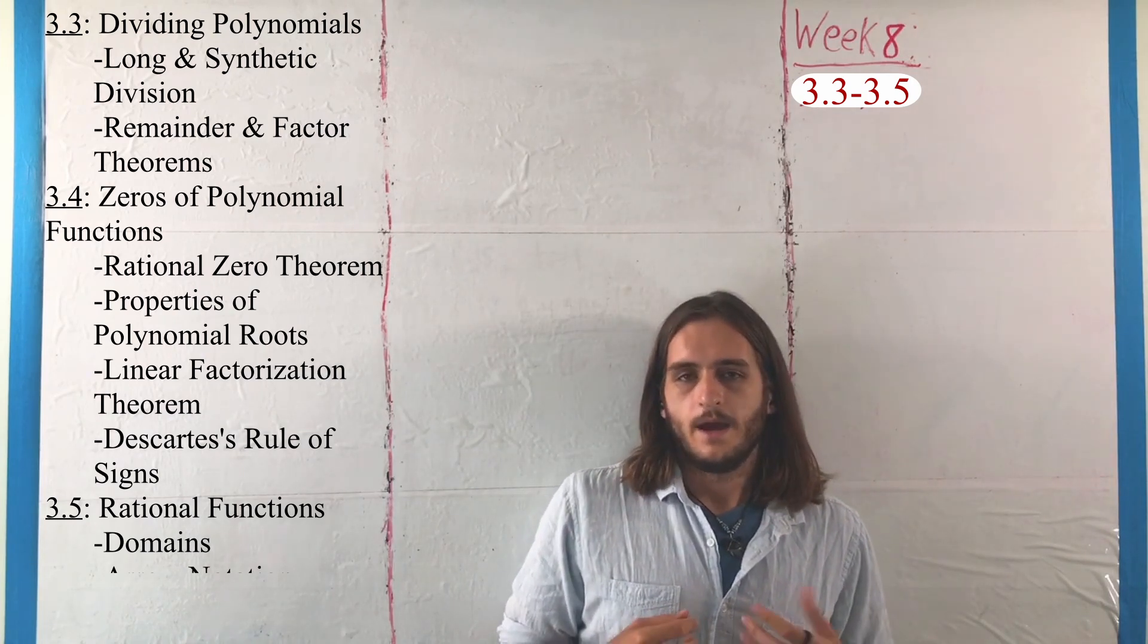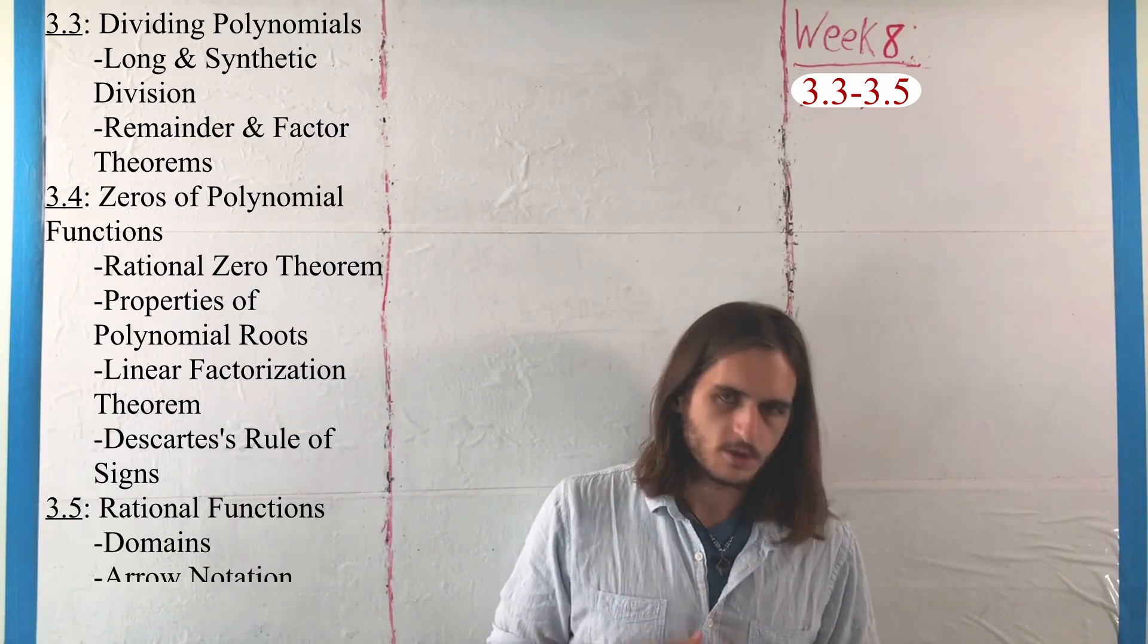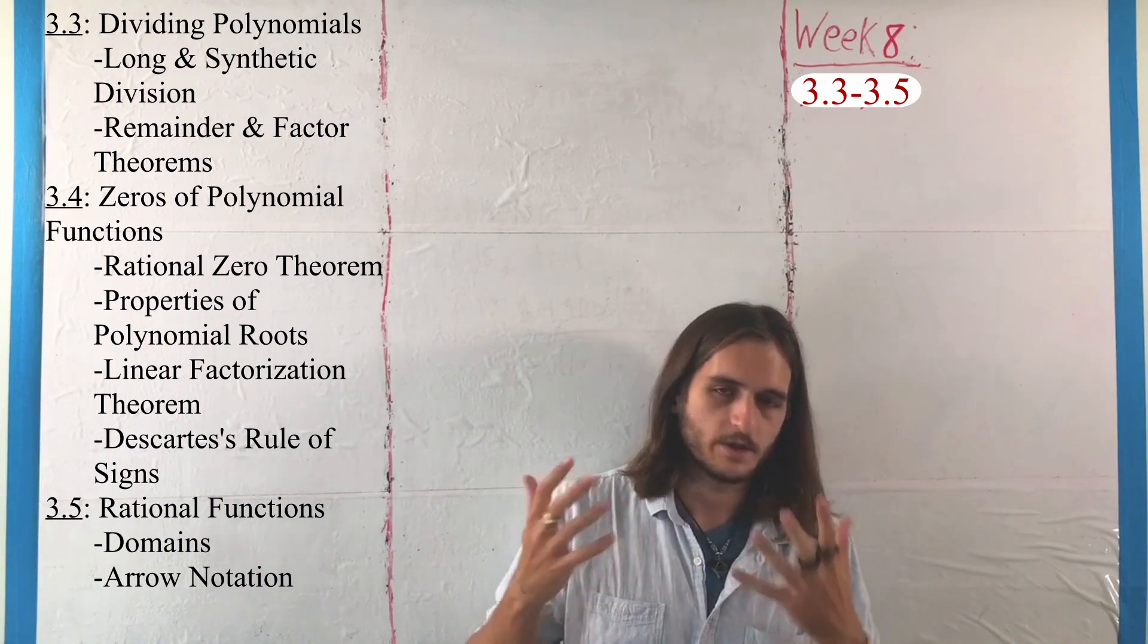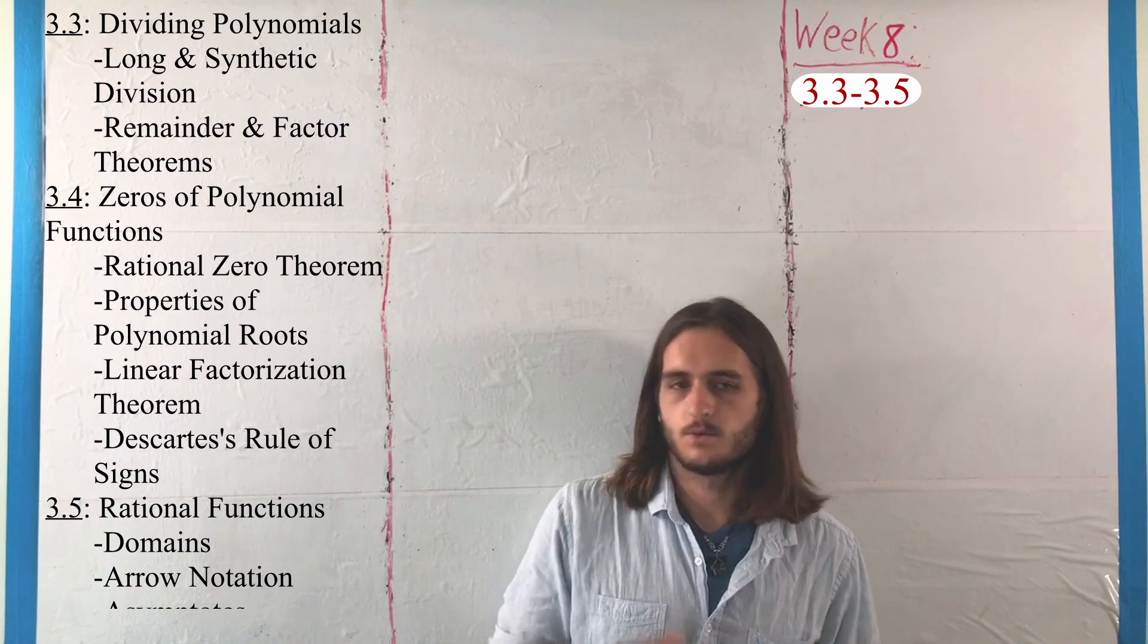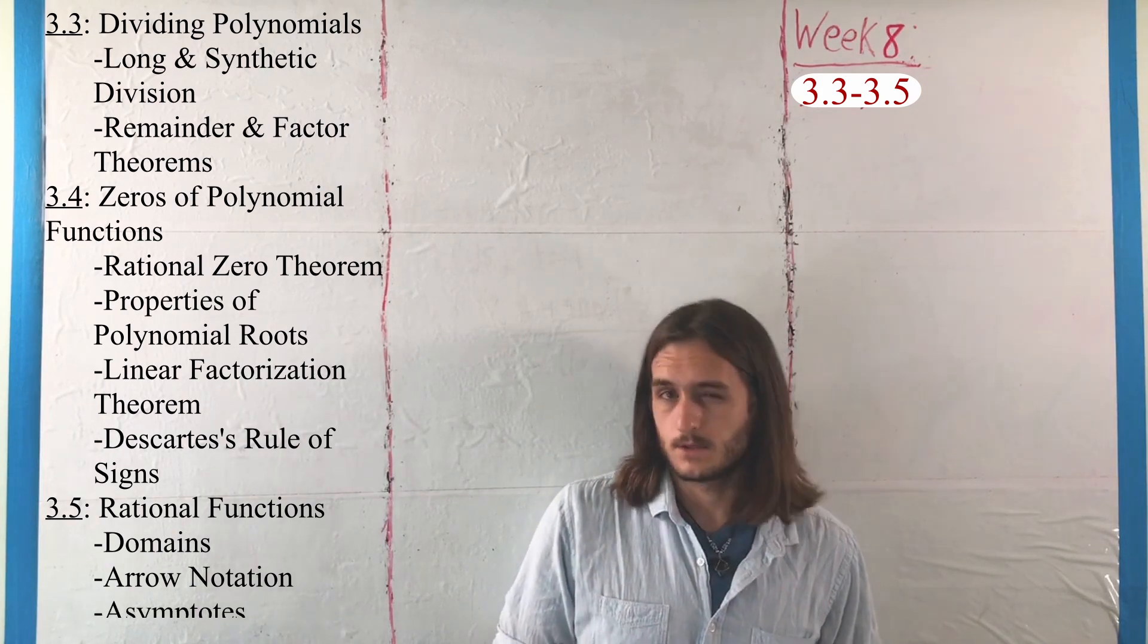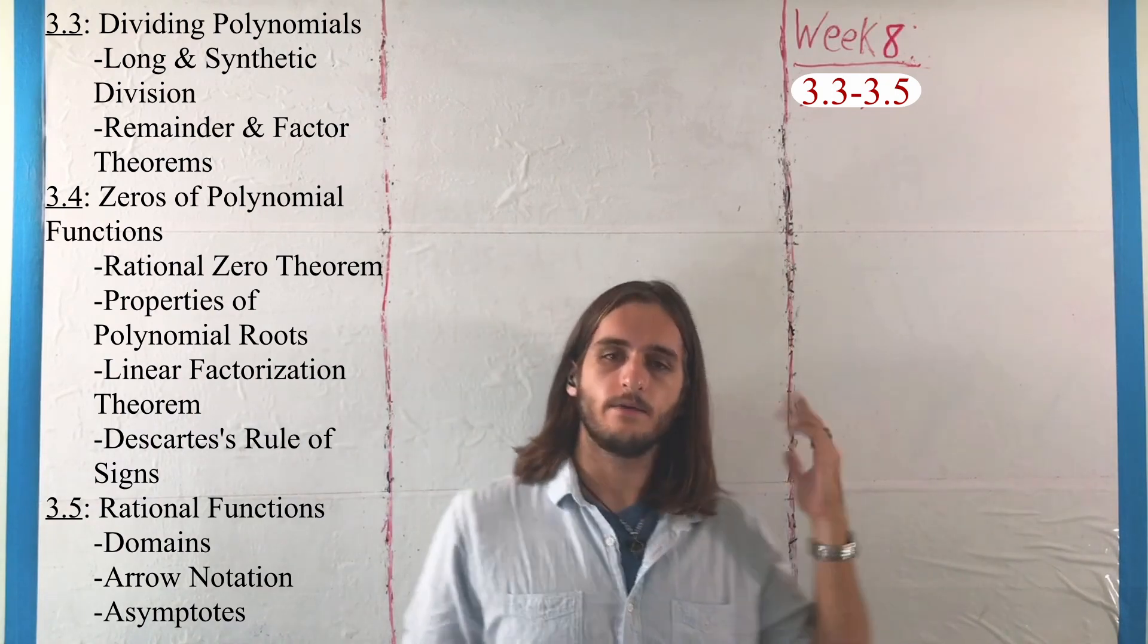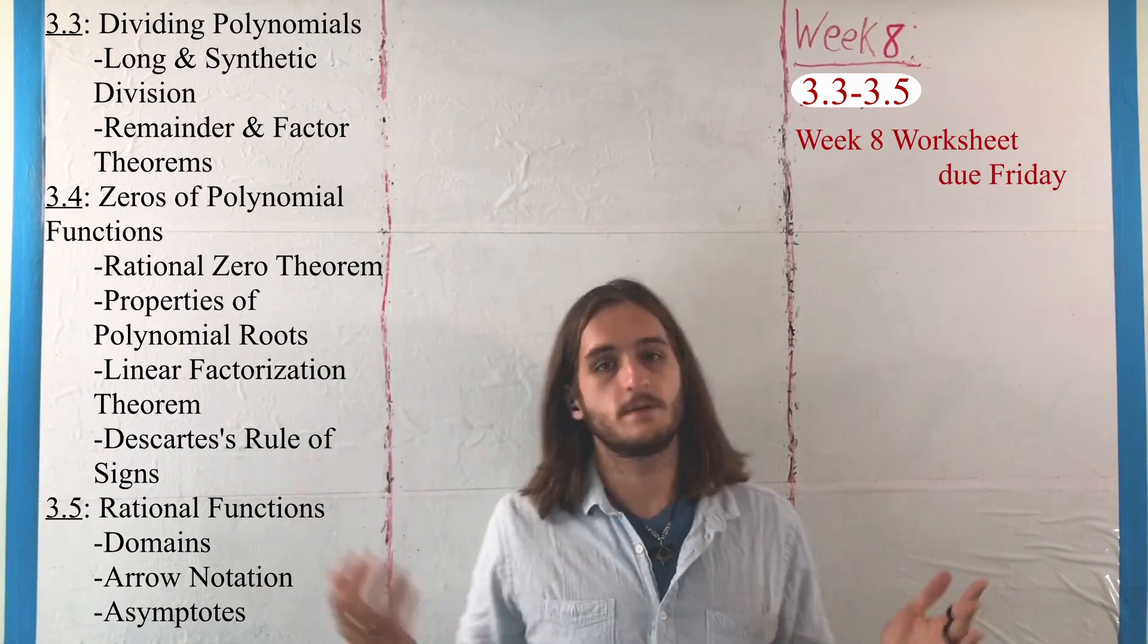And after that, we'll see some special notation for trying to figure out what happens around certain types of values using what's called arrow notation. Then we'll spend a while there on things called asymptotes and asymptotic behavior, where for this week we have a worksheet for more practice with all of this stuff.